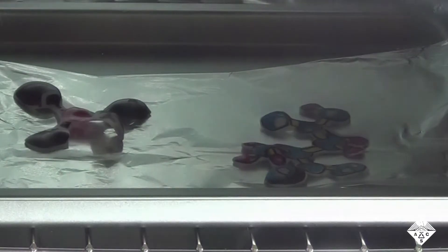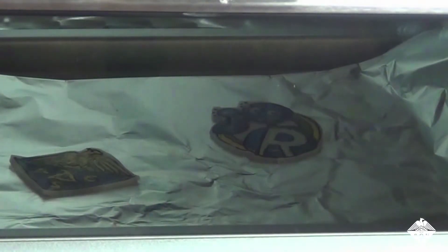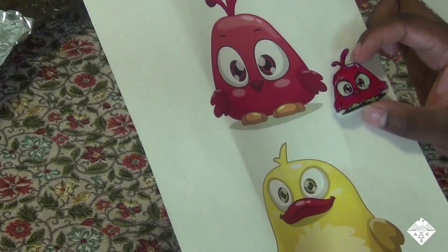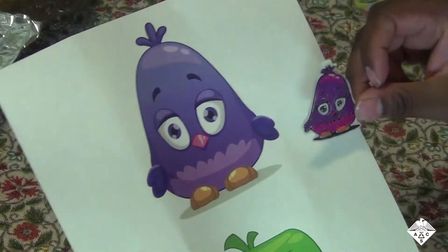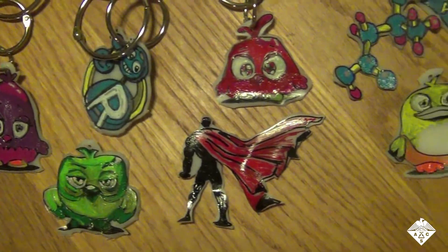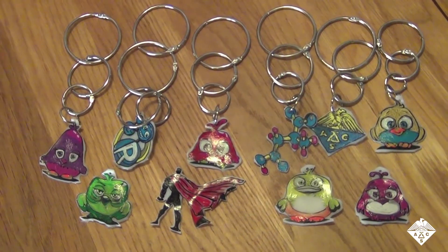Shrinky Dinks undergo their dramatic transformation because they are shaped memory polymers. Manufacturers pre-stretch the sheets of polystyrene so that when heated above 217 degrees Fahrenheit, they shrink back to their former size.